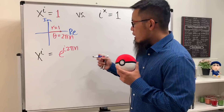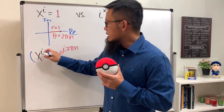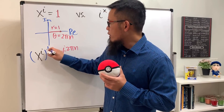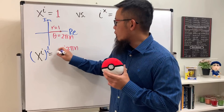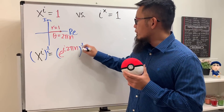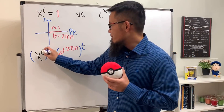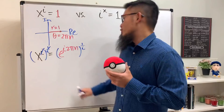This equation becomes: on the left-hand side we still have x to the i power, and on the right-hand side we put 1 into r·e^(iθ) form. Since r is 1, we just have e to the i times theta, which is 2πn. That's for 1, and n is just an integer. To get rid of this i, we raise both sides to the 1/i power — or equivalently take the i-th root on both sides.